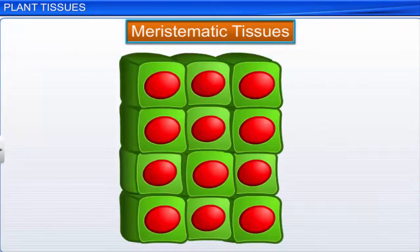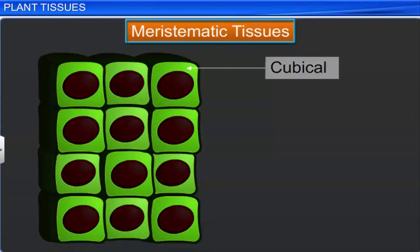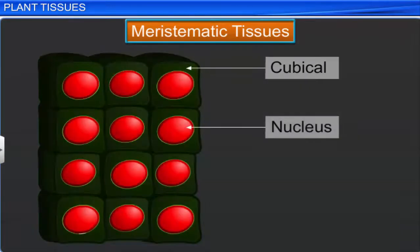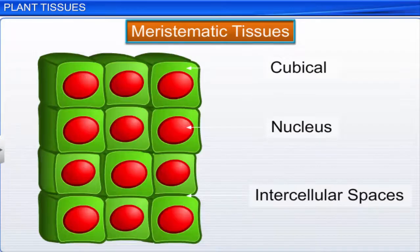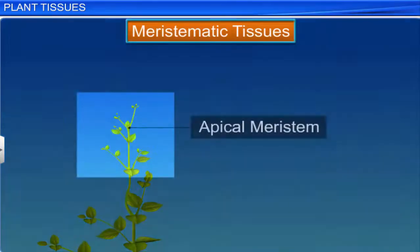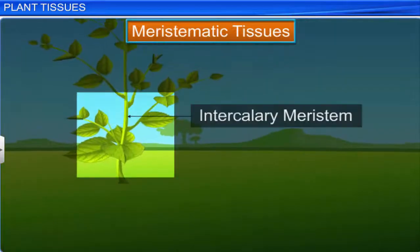Meristematic cells are living, cubical, and thin-walled. Each cell has a large nucleus. Cells are closely packed with no intercellular spaces. Depending on the region where they are present, meristematic tissues are classified as apical, lateral, and intercalary.